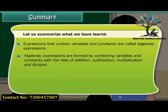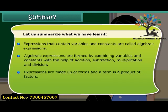Algebraic expressions are formed by combining variables and constants with the help of addition, subtraction, multiplication and division. Expressions are made up of terms and a term is a product of factors. The coefficient is the numerical factor in the term.